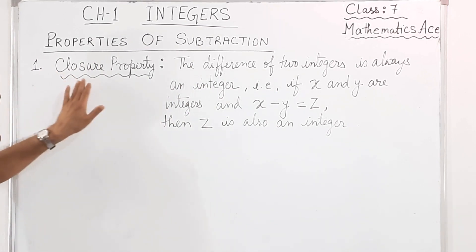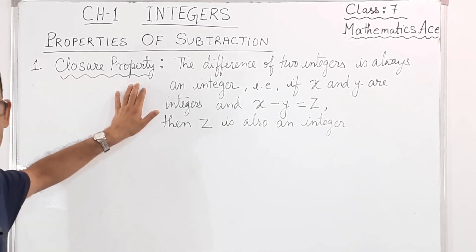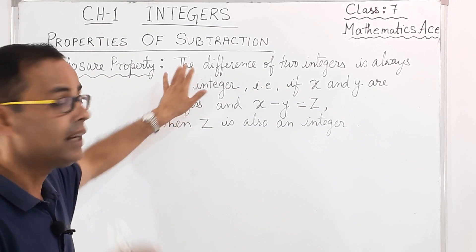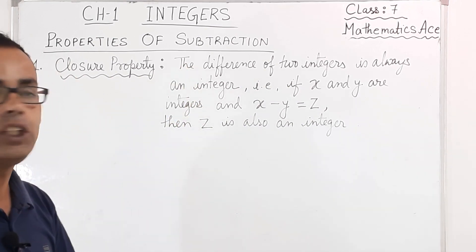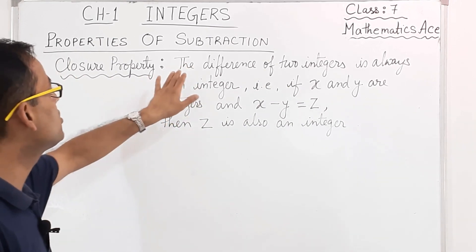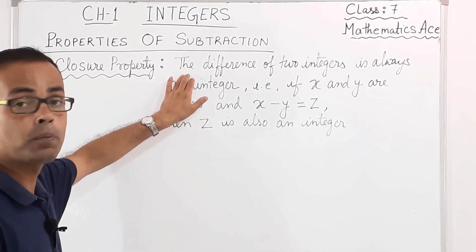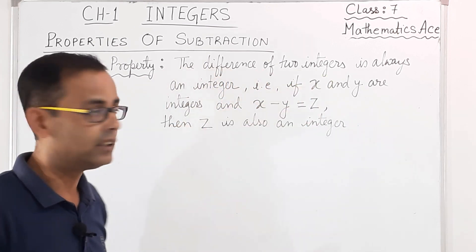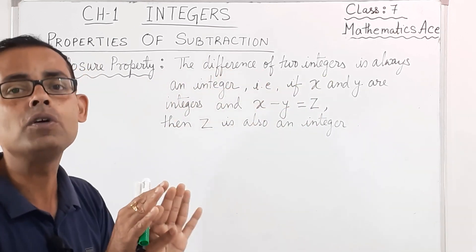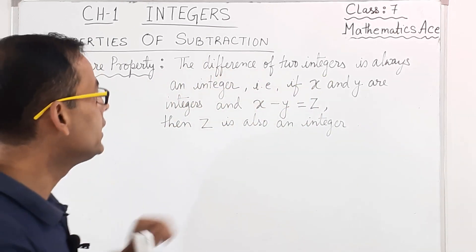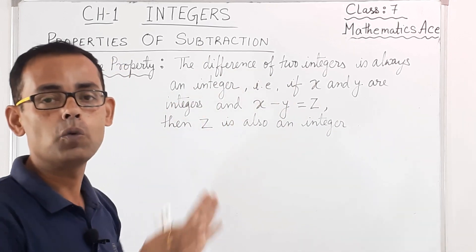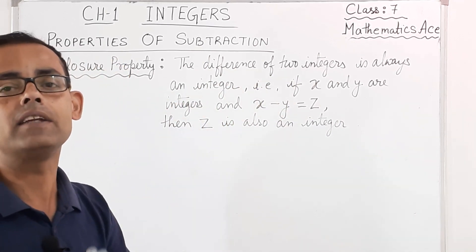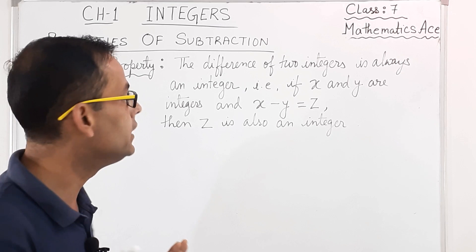The first property is the Closure Property. Like the properties of addition, here also the Closure Property states that the difference of two integers is always an integer. So when you subtract two integers, whatever the outcome is, that is also an integer.